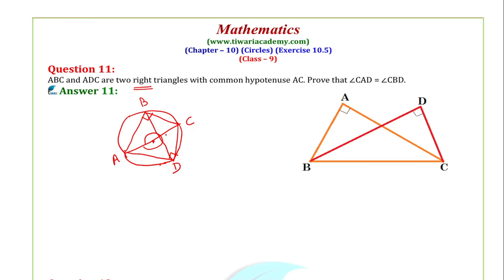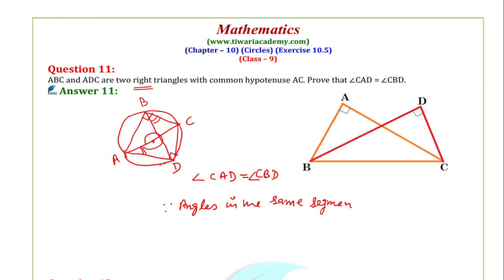Join B to D. Now, angle CAD — so CAD will be equal to angle CBD. The reason is, as we know, angles in the same segment are equal. So here we have proved this question.